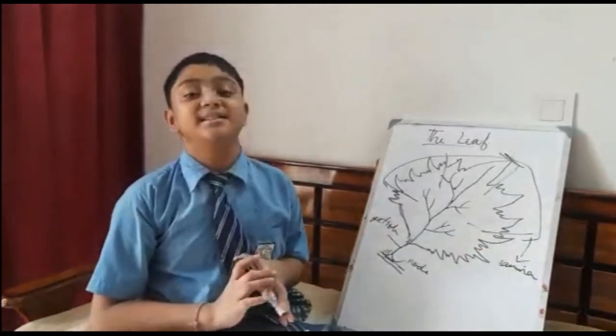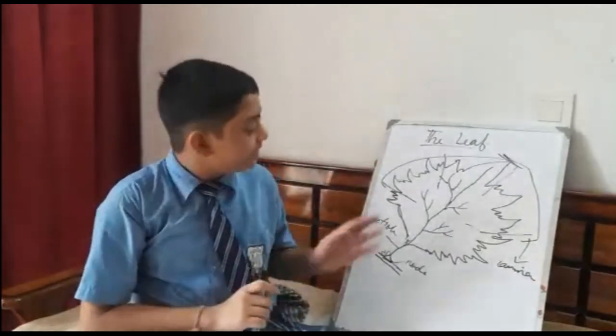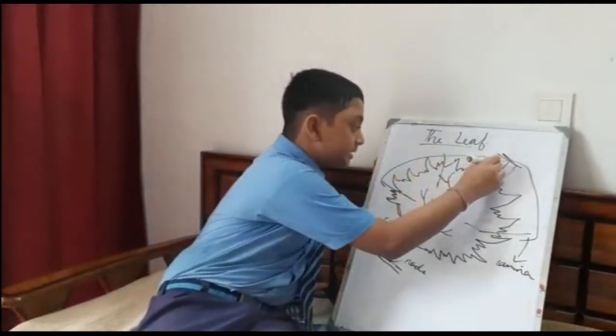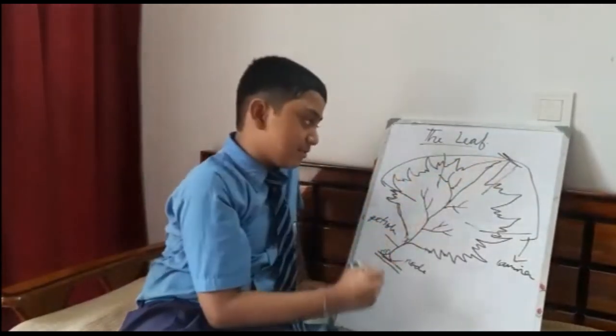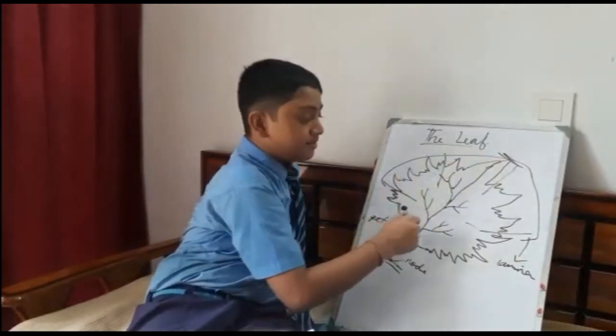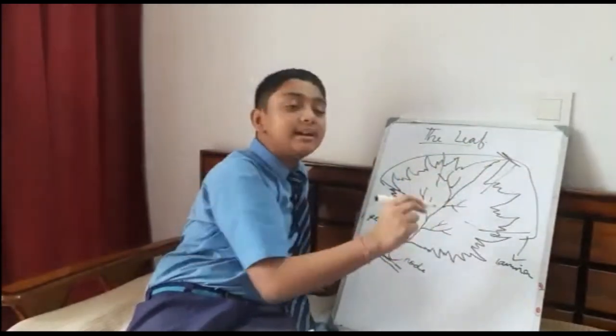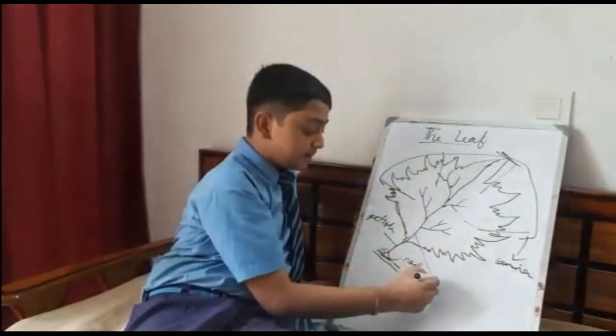They are known as sessile or petiolate leaves. Now we will learn what is a midrib. Yes, the thickened vein that passes along the center of the leaf. You can see a thickened vein is passing along the center of the leaf. This thickened vein is called the midrib.